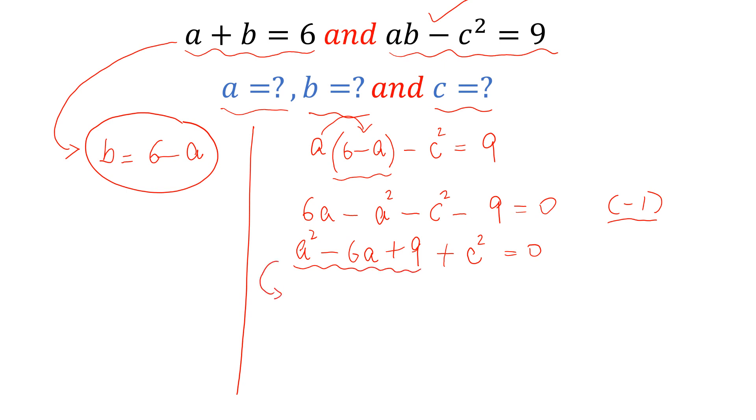we can write it A minus 3 whole square plus C square is equal to 0. And this is only possible if A minus 3 is equal to 0 and C is equal to 0. So C is equal to 0, and from here we can write A is equal to 3.